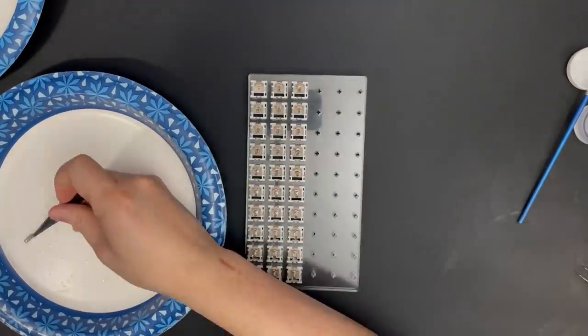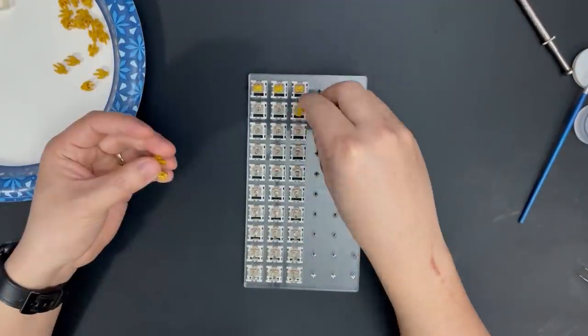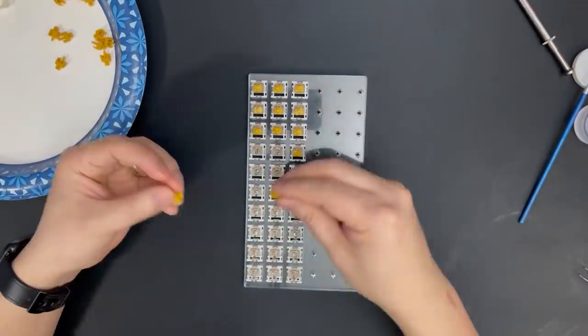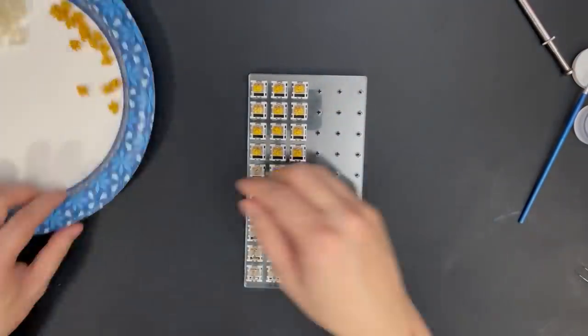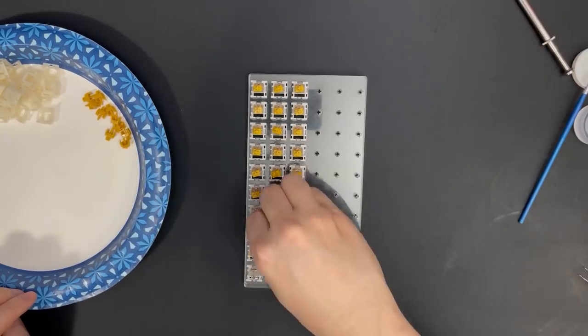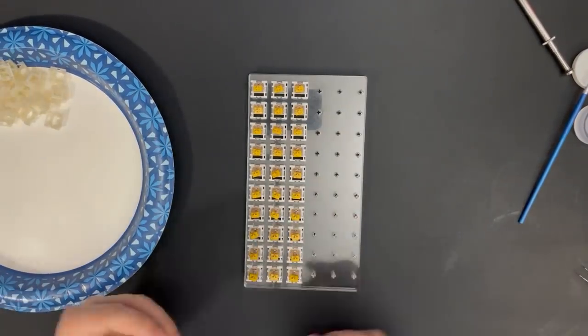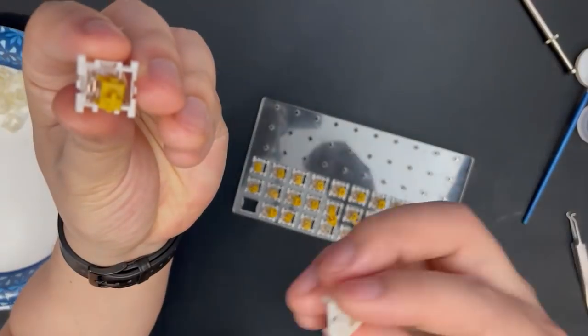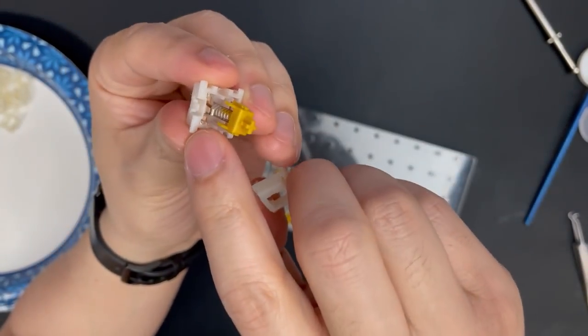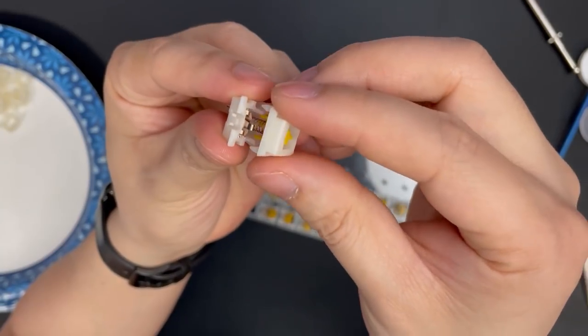Then, put the stems on the springs. Usually, you should use a picker to place them since you'd lube the stems as well, but I'm leaving the stems unlubed on these U4Ts to preserve the tactility, so I'm just going to be a savage and use my bare hands. When closing the switch up, be sure that the stem legs are facing the metal leaf, and that the taller side of the top housing is over the metal leaf side of the bottom housing before snapping it shut.